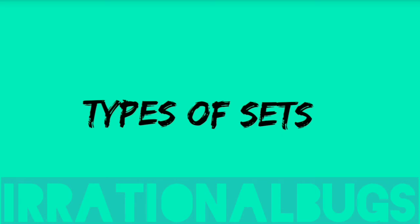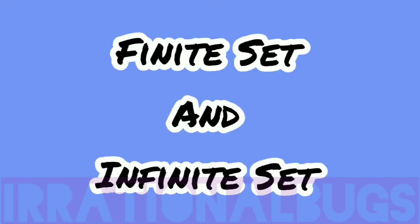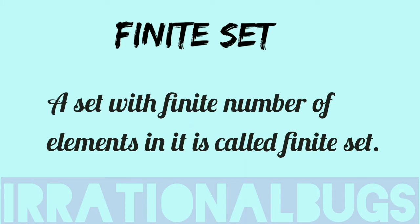Hello students, today we will learn types of sets. We are starting with finite set and infinite set. So what is a finite set? A set with finite number of elements in it is called a finite set. Finite set is the set that the elements are finite, that is countable.